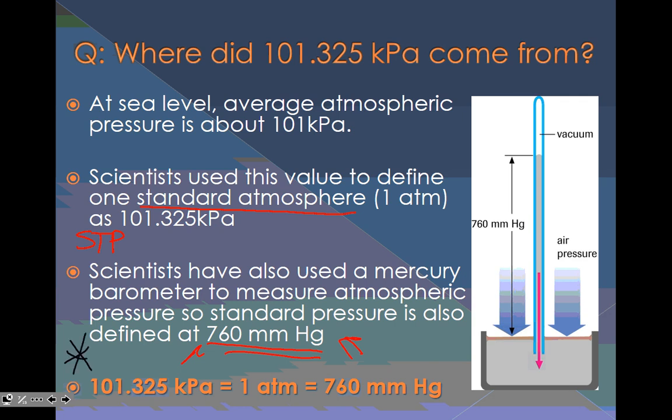101.325 kilopascals is equal to one atmosphere, which is also equal to 760 millimeters of mercury.